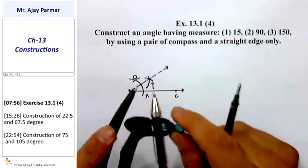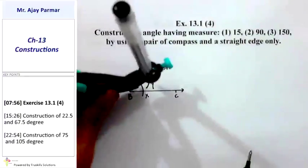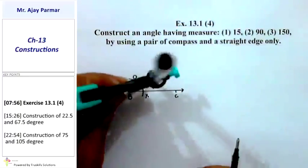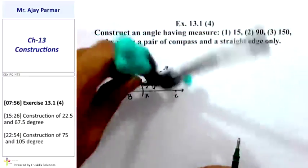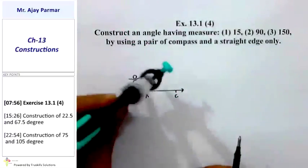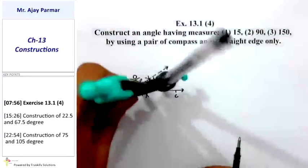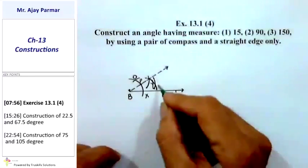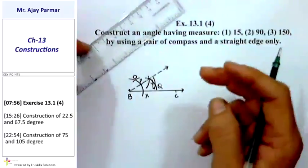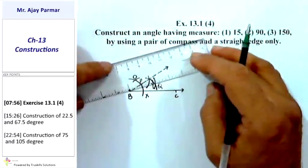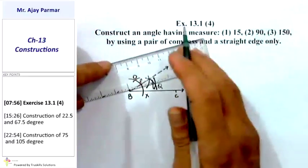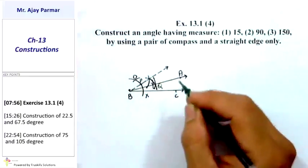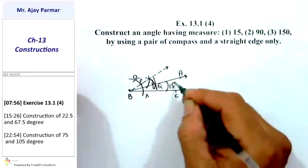I can change the radius or keep it the same. Taking the point of intersection as center — let us call it point P — with any radius, I am going to take P as the center and draw an arc, then take X as the center and cut the previous arc. These arcs intersect at point Q. The ray BQ gives us an angle of 15°. Drawing ray BA passing through Q gives angle ABC of 15°.